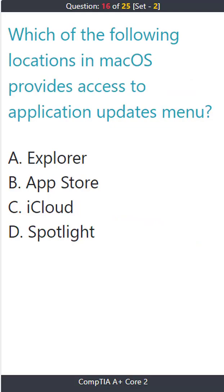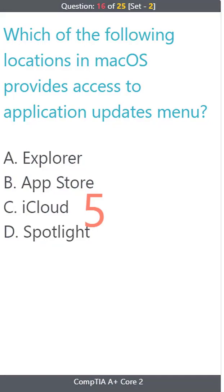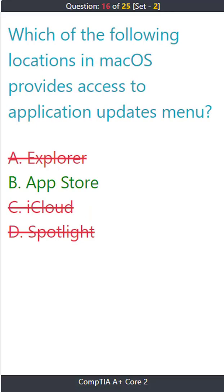Question 16. Which of the following locations in Mac OS provides access to application updates? A) Explorer, B) App Store, C) iCloud, D) Spotlight. The correct answer is B) App Store.